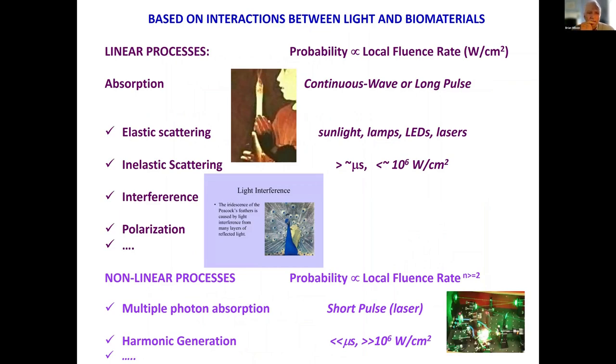Most of the applications used at the moment in biophotonics are linear processes, where the probability of the interaction between light and the molecule is proportional to the local fluence rate or the intensity. Looking at continuous wave or long pulse light sources. In this area of linear processes, there are multiple interactions that can happen: absorption, scattering, inelastic and elastic scattering, interference, polarization, etc.